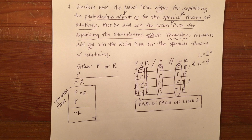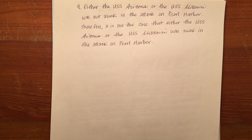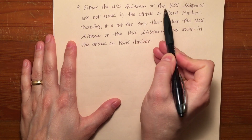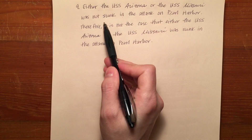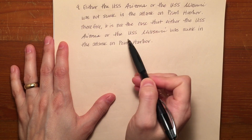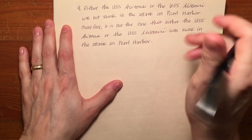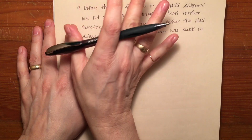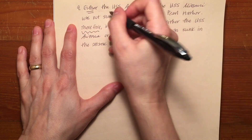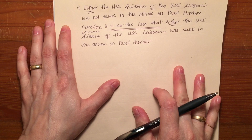Let's look at a second example that might be difficult to translate — number nine. It says: either the USS Arizona or the USS Missouri was not sunk in the attack on Pearl Harbor, therefore it is not the case that either the USS Arizona or the USS Missouri was sunk in the attack on Pearl Harbor. This one's a little more complicated because it involves a bit more translation and a set of parentheses, but nothing too terrible. We've got either-or, then therefore, and 'it is not the case that,' and another either-or.